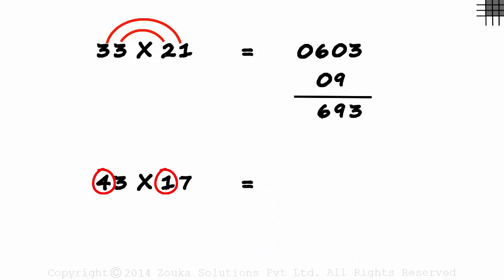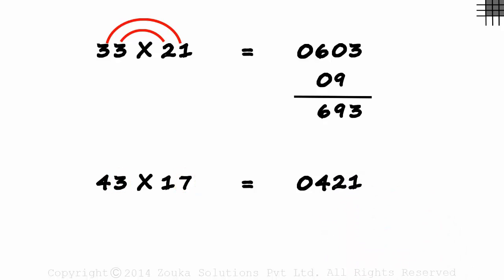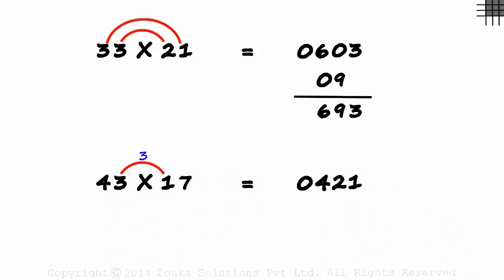4 times 1 is 04, 3 times 7 is 21, 3 times 1 plus 4 times 7 is 31. 1, 2 plus 1 is 3, and 4 plus 3 is 7. 731. 731 is the answer.